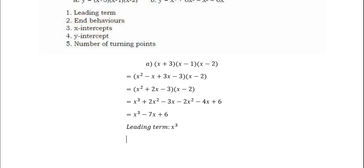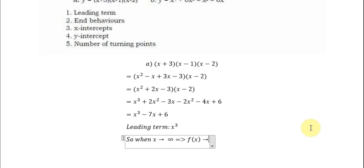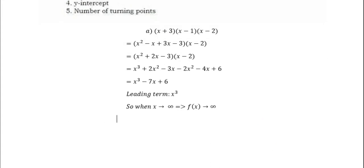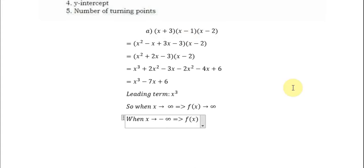The next one is behaviors. When s approaches positive infinity, the function will go to positive infinity, because this is a positive term. But when s approaches negative infinity, this function will go to negative infinity — because if you put a negative number to the power of 3, that's an odd power, so the function will go to negative infinity.